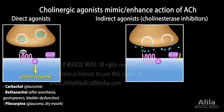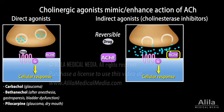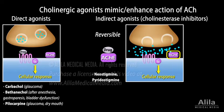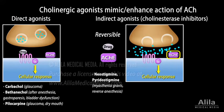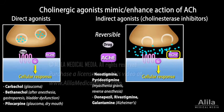Indirect agonists act by inhibiting the enzyme acetylcholinesterase, thereby increasing the concentration of acetylcholine available at the synapse. Reversible inhibitors form a transient, reversible complex with the enzyme, slowing down its recycling and making it less available for breaking down acetylcholine. Some of these drugs are used to treat myasthenia gravis, to reverse the effects of anesthesia, or to boost cholinergic activity in Alzheimer's brain to compensate for the loss of functioning neurons.